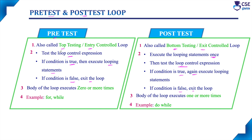In a pre-test loop, since the loop control expression is tested first, if it evaluates to false immediately, the body of the loop will not execute at all — that is, the body executes zero times. That is the minimum execution. As long as the condition is true, it will execute more times, so the body of the loop executes zero or more times.